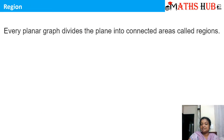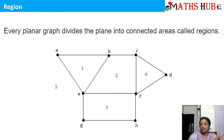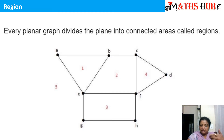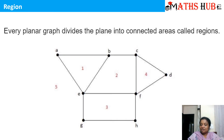Now let's understand some properties — but before that, the next definition is 'region'. Every planar graph divides the plane into connected areas which are called regions. So suppose this is a planar graph drawn on a plain paper with no two edges crossing each other. The number of areas into which this graph is divided are the regions. You can see the areas marked here: first area, second area, third area, fourth area, and the outside area is area number 5. So this graph divides the entire plane into 5 regions.